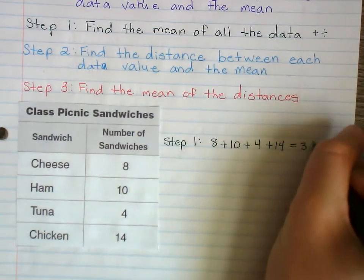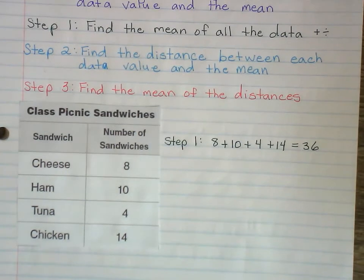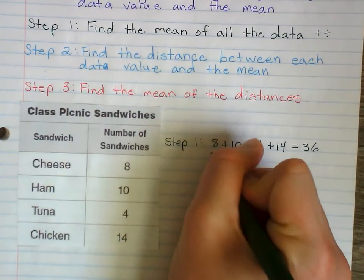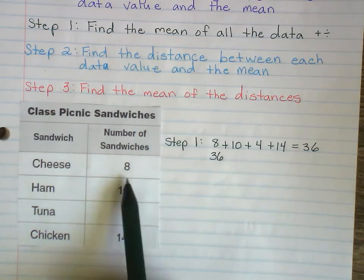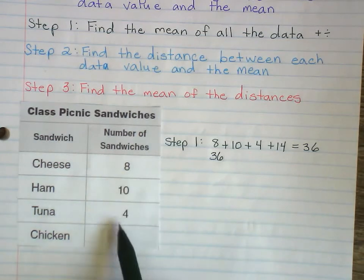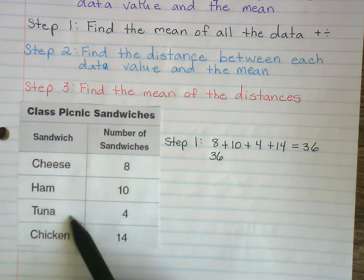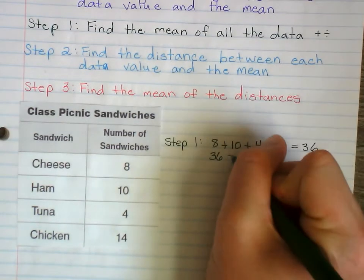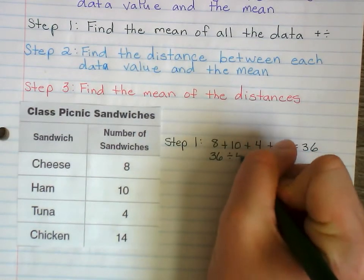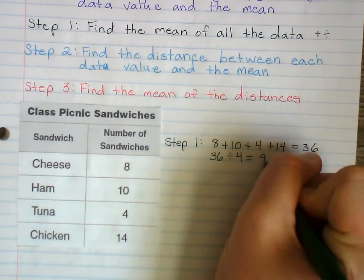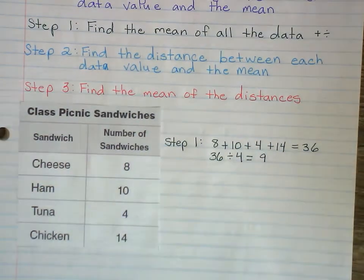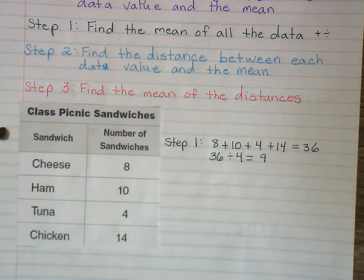Then we divide by how many numbers we added — how many different types of sandwiches there are: one, two, three, four. So 36 divided by 4 equals 9. That is step one — we found the mean, the average of all the values.